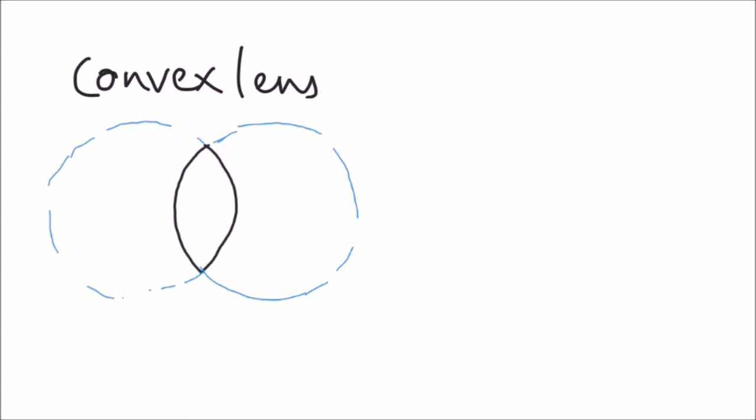As we can see, a convex lens is a part of two spheres. This side of a lens being a part of the sphere and this side of a lens being a part of the sphere.